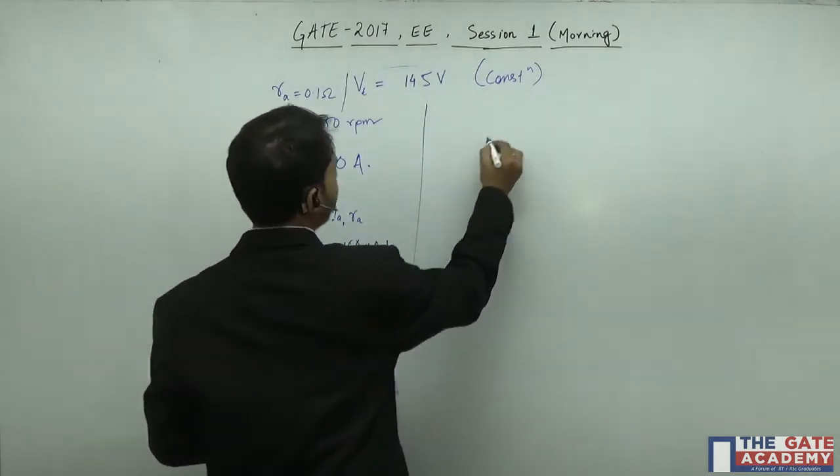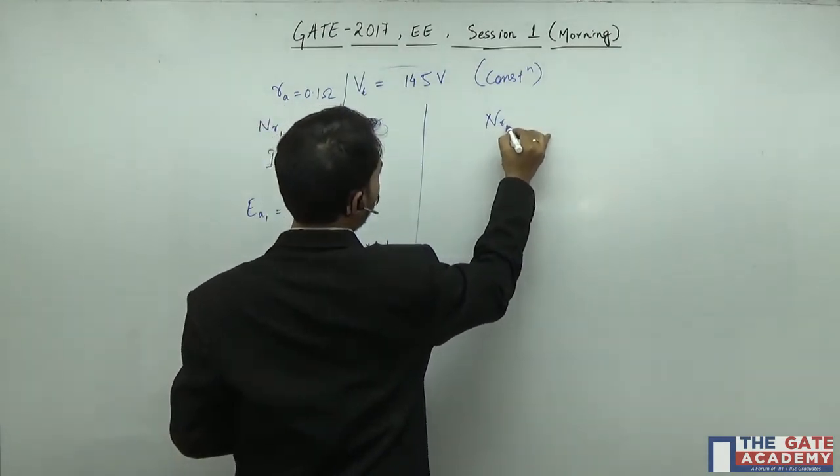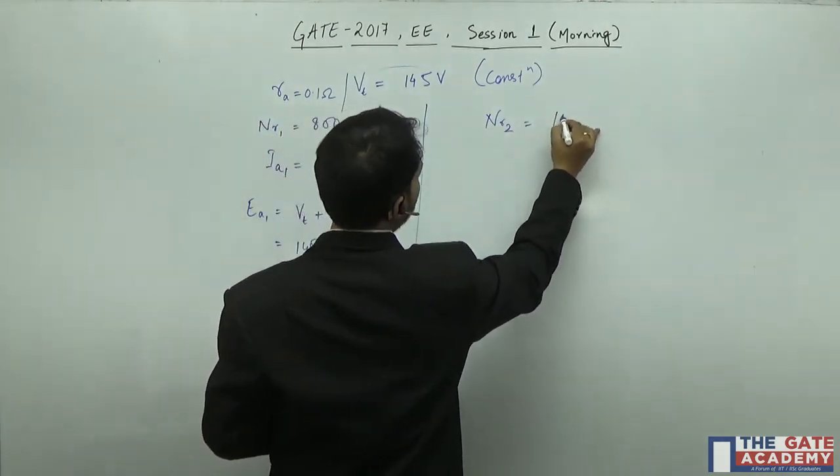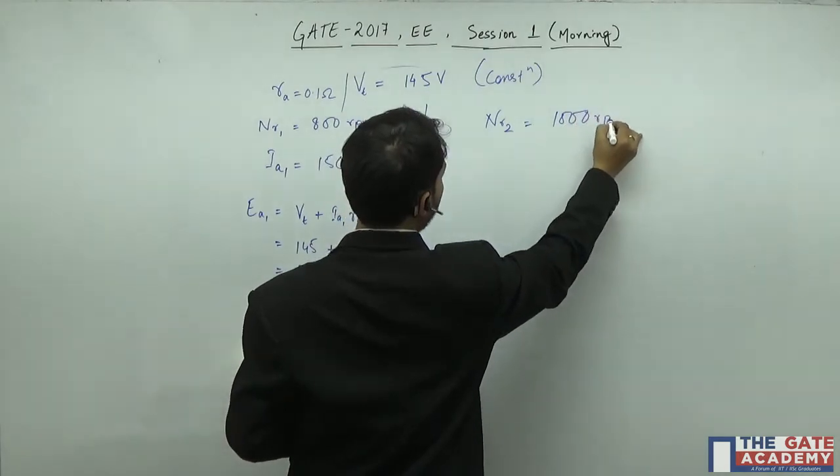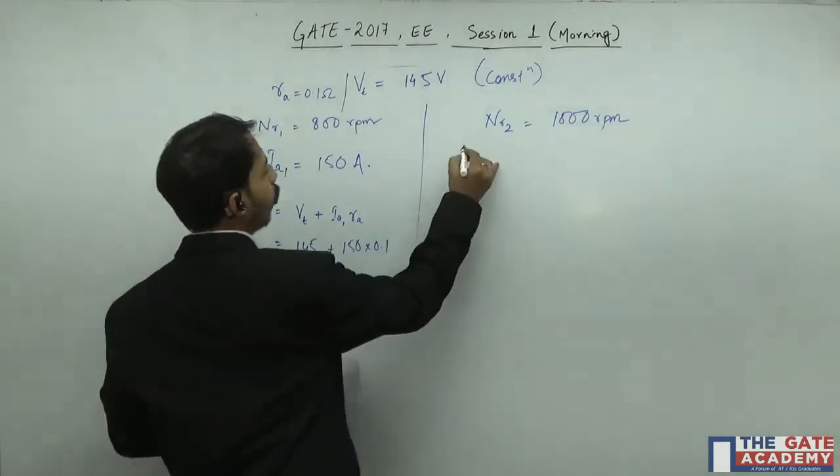Now the second case is given: the rotor speed has increased to 1000 rpm. Now we need to find out the current.